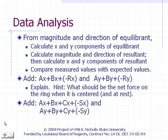If the ring is perfectly centered and not moving, then the net force on the ring must be zero. This means the x components of all forces on the ring must add up to zero. You can verify this by adding the x components of vectors A, B, and their equilibrant, negative R. This also means that all y components must add up to zero. The same should be true for vectors A, B, C, and their equilibrant, negative S.